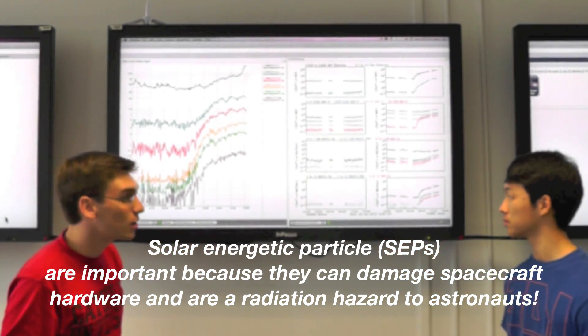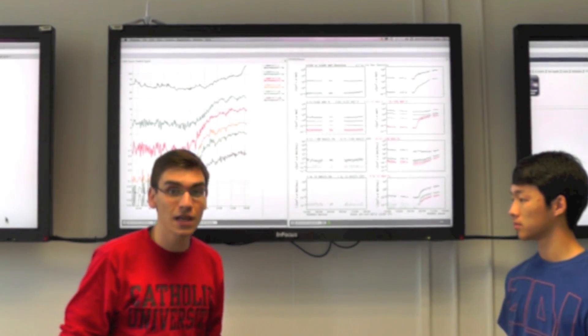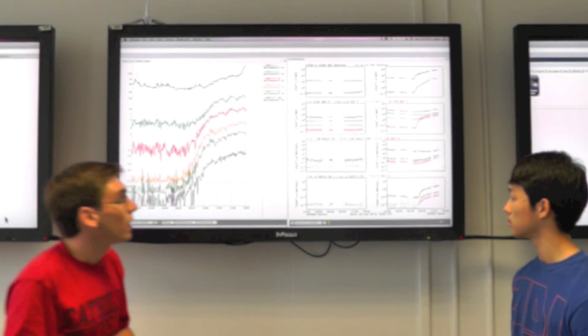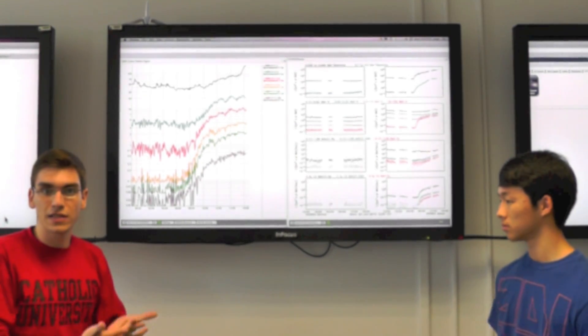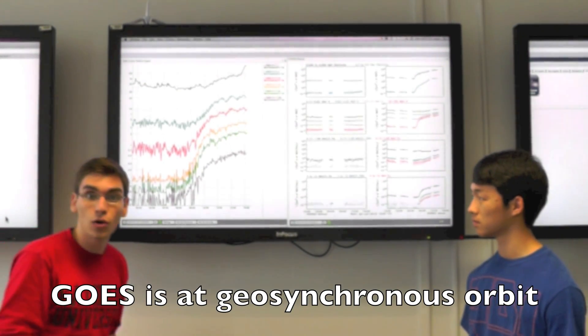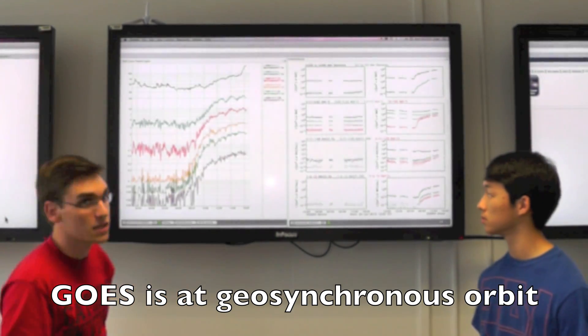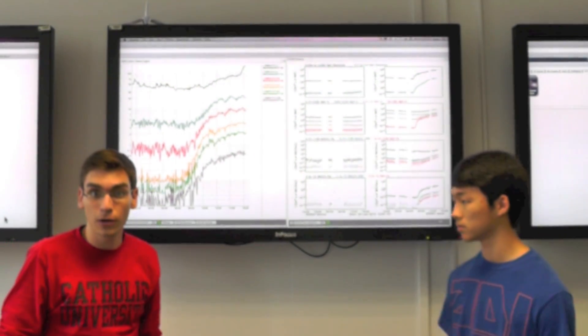That is correct, Jimmy. Stereo-A detected a proton flux that had increased by three orders of magnitude. These particles from the solar event were also detected in GHOST-13. We can see here the large increase from the solar energetic particle event.